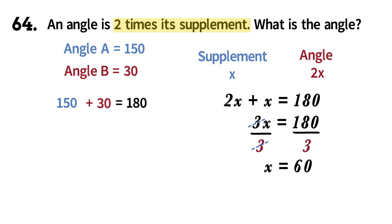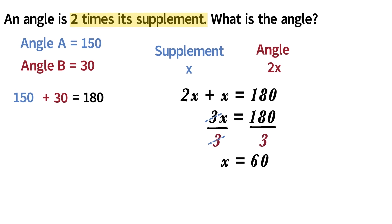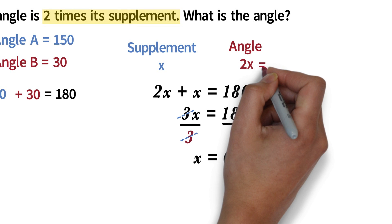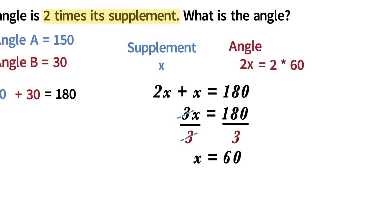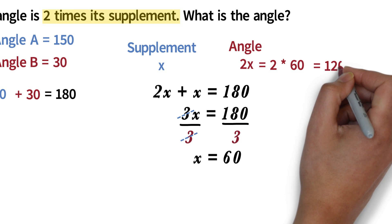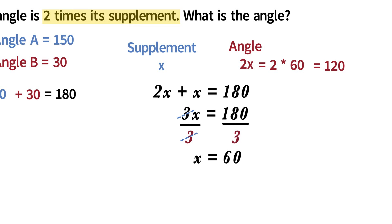Here again, we have to be careful to note what the question is asking. What we just found is x, and we know that x is the supplement. The angle is 2 times the supplement. So we have 2 times 60. The angle is therefore 120. We are deliberately bringing questions like this so that you will learn to be careful with what the question is asking for. You should not do all this work and get the answer wrong because you chose 60 instead.